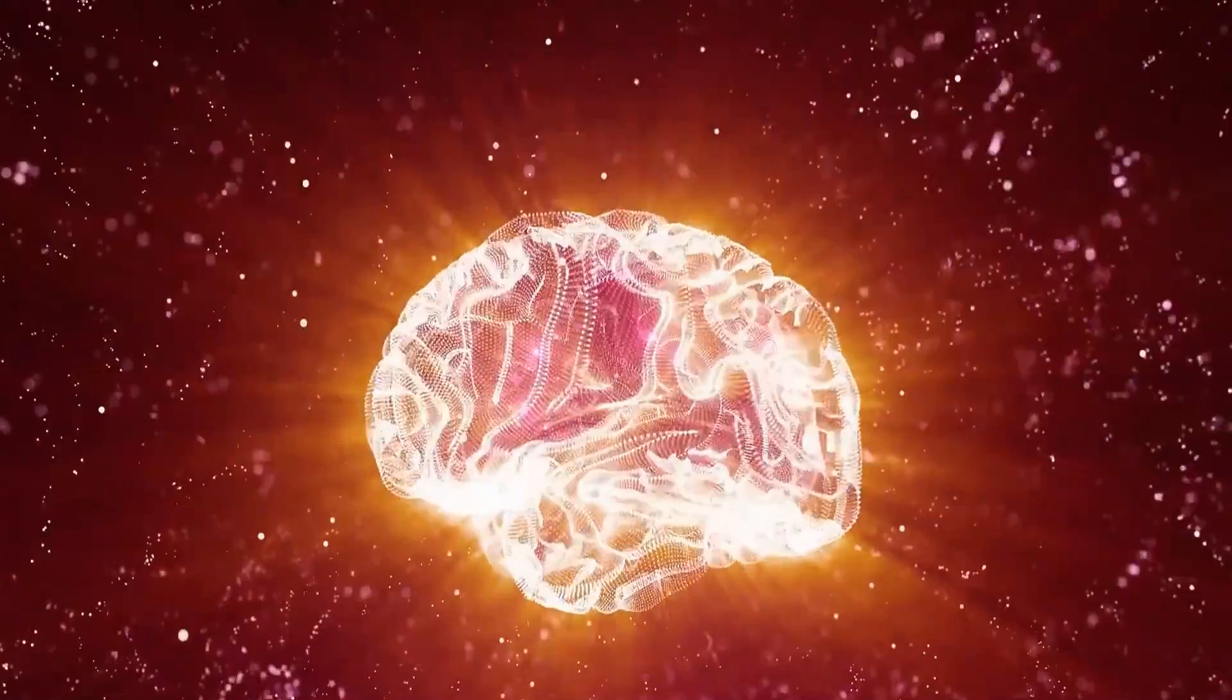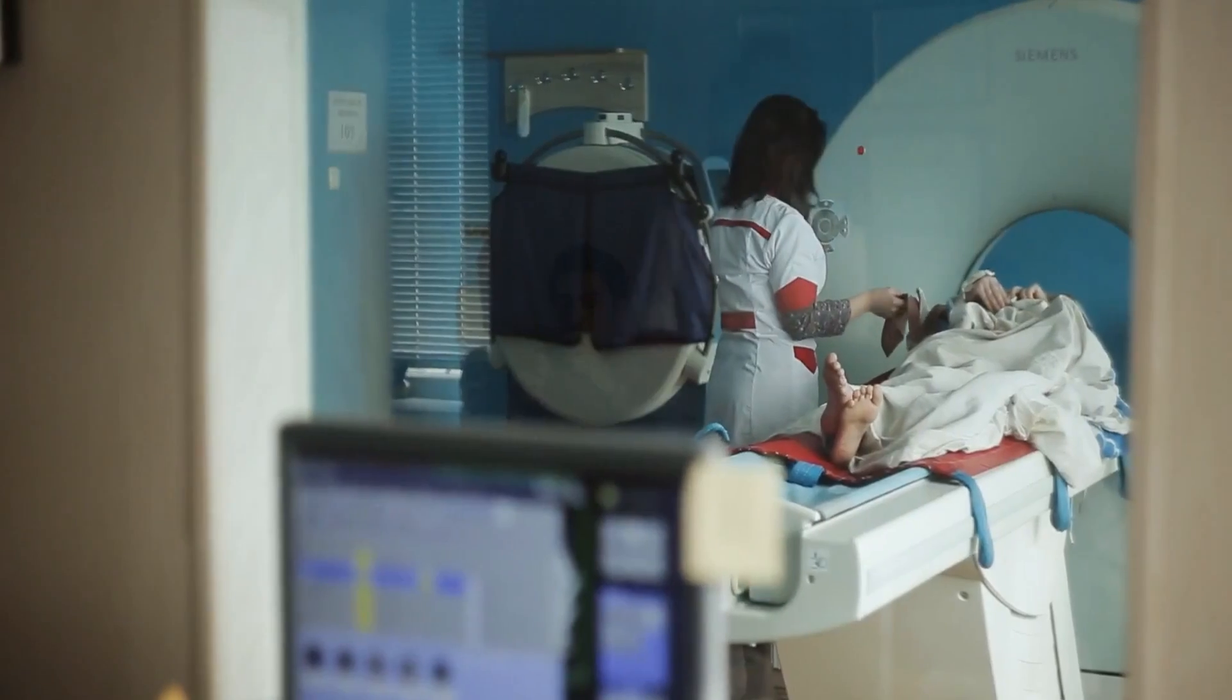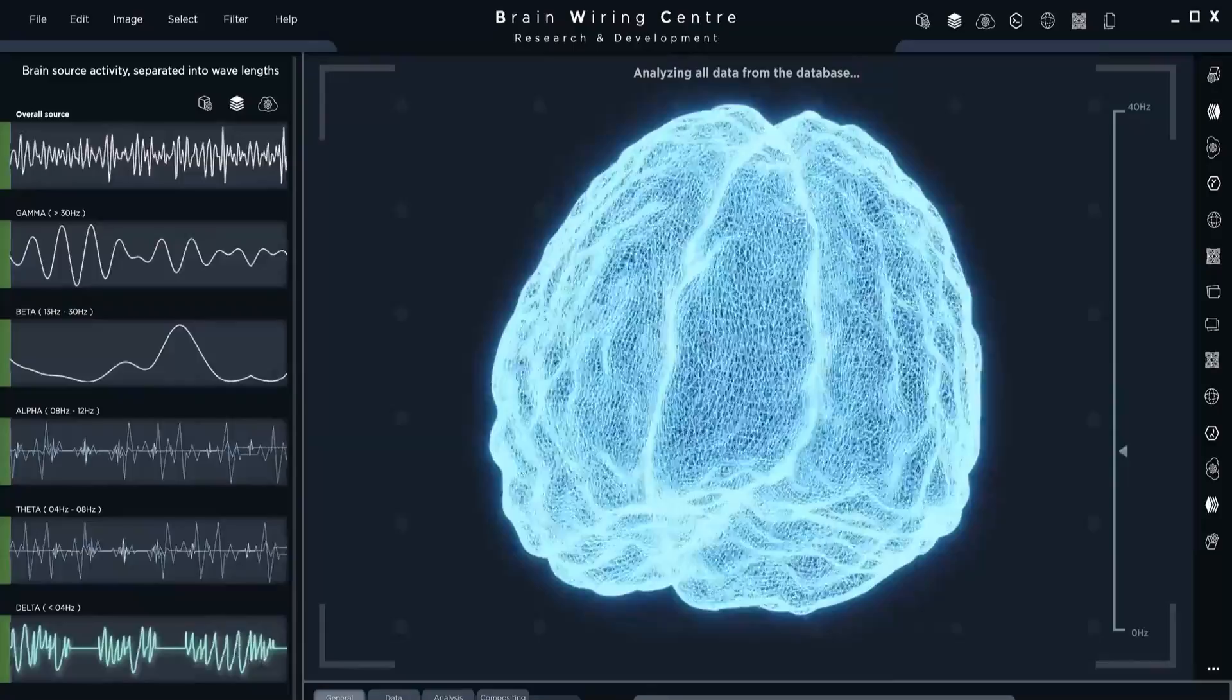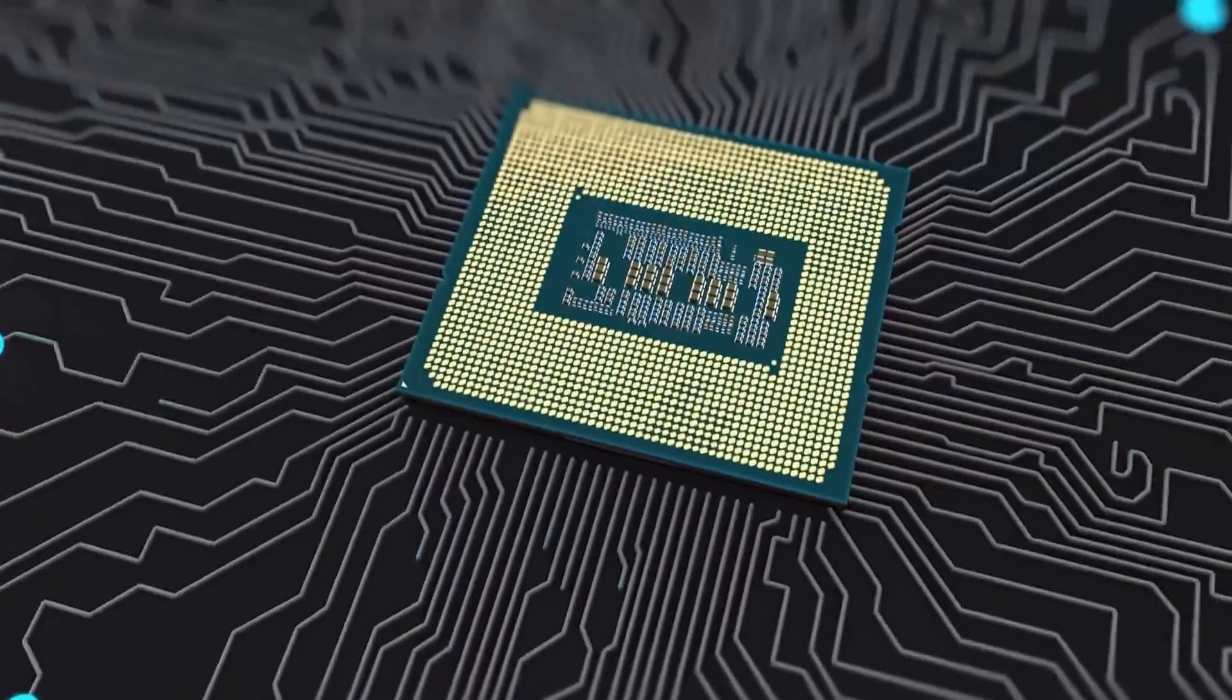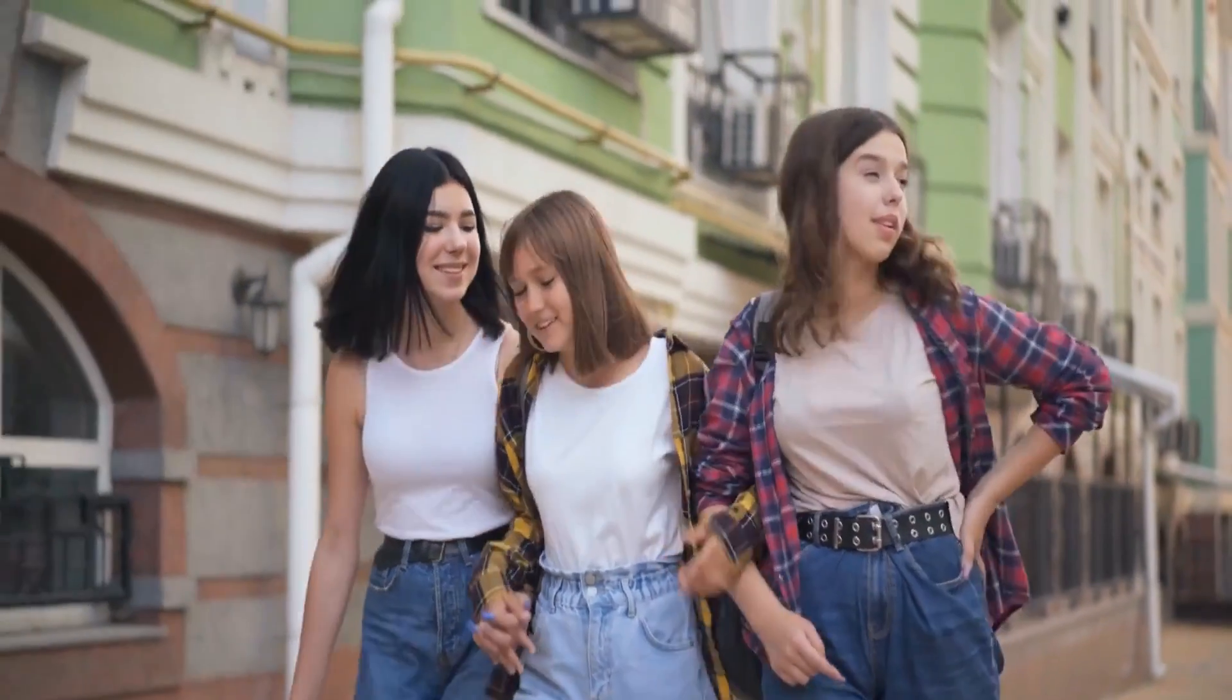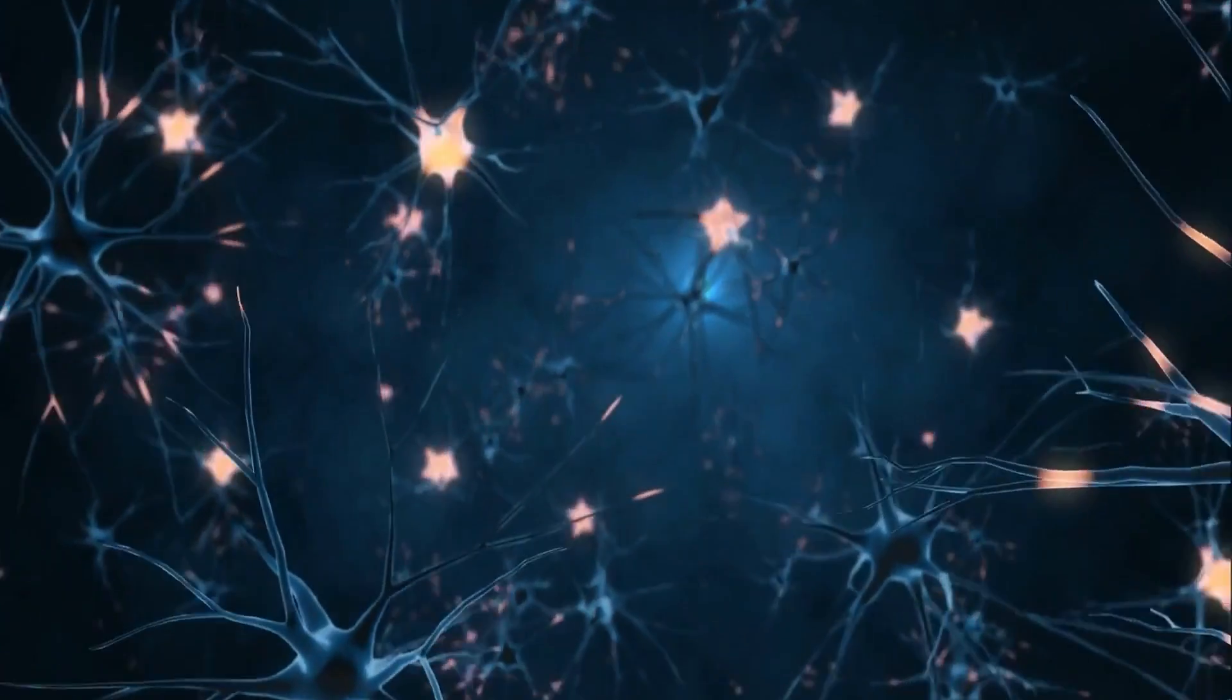Now let's explore non-invasive BCIs. One company, Kernel, founded in 2016 by tech entrepreneur Brian Johnson, has taken a completely non-invasive approach with their BCI headset called the Kernel Flow. This headset resembles a futuristic bulky bicycle helmet and is packed with electrodes placed all around the brain. Unlike other BCIs that focus on specific areas of the cerebral cortex, Kernel's approach allows for more data collection from the brain as a whole.